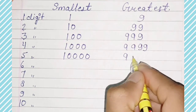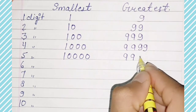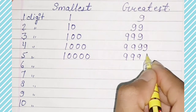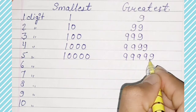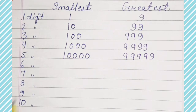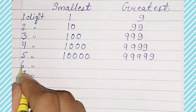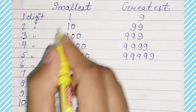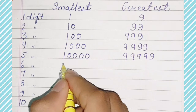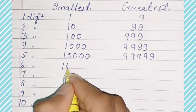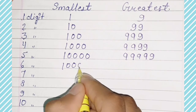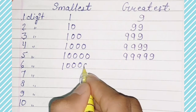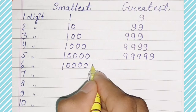1, 2, 3, 4, 5. 6-digit smallest number is 100000.